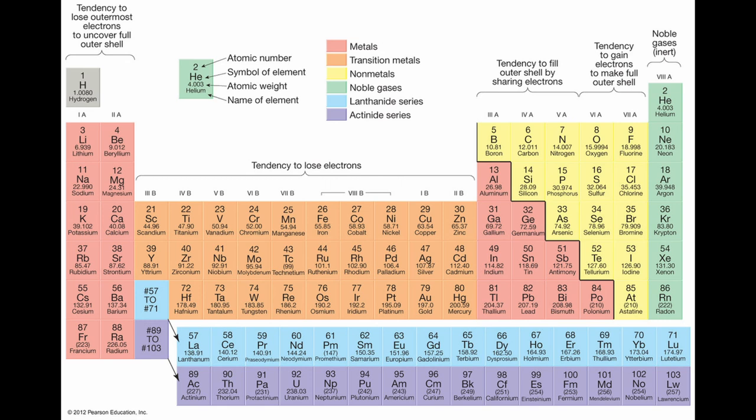Atoms want to be stable because they have less energy when they are stable. Stable atoms have all the orbitals filled with electrons. To achieve this, atoms may lose or gain electrons. This can lead to a stable electron configuration similar to a noble gas.